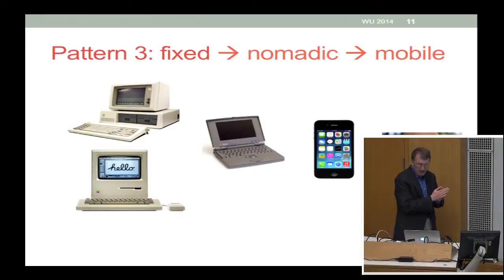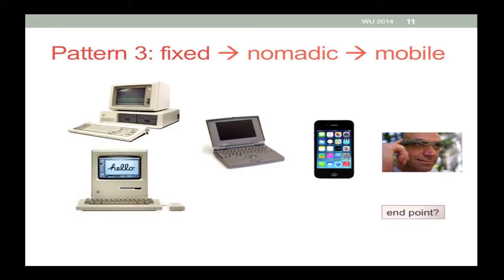Pattern three is a classical one we've largely completed: if you wanted to do prognostication, the easy piece was you took something that was stationary — or even further back, something in a big refrigerator-sized box — and moved it onto a PC-style box. Then you made it nomadic, then mobile. That transition has largely been completed. You can still make it faster and bring more capabilities to mobile devices, but human input and other considerations probably limit that more than technology availability. And given networking, it's not even clear it really matters where the functionality is anyway.